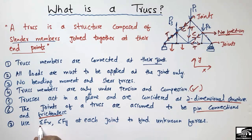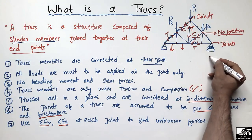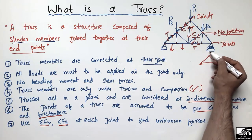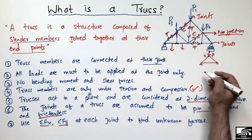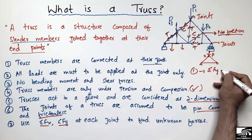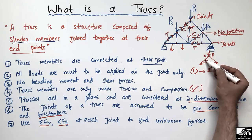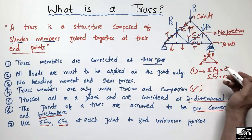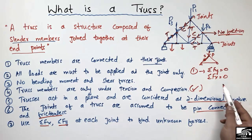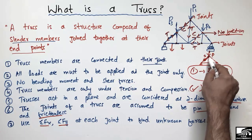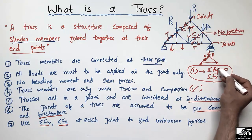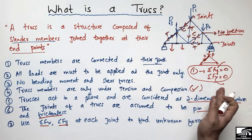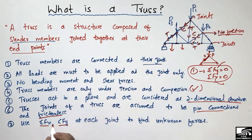The seventh important point is related to solving the truss structure. It states to use summation of Fx and summation of Fy at each joint to find the unknown forces. At each joint, take ΣFy = 0 to find the unknown vertical force and ΣFx = 0 to find the unknown horizontal force. Using these equilibrium equations at each joint, you can find all unknown forces.